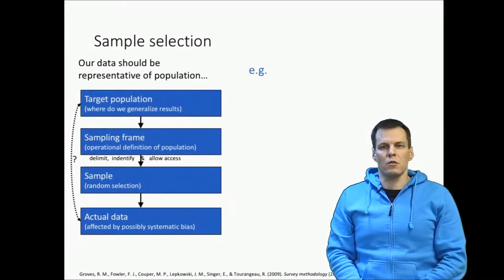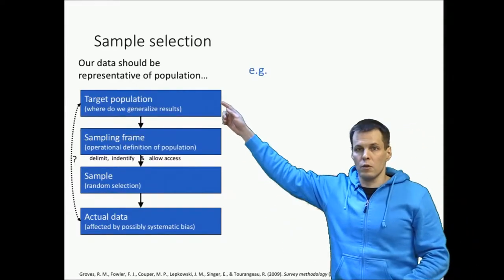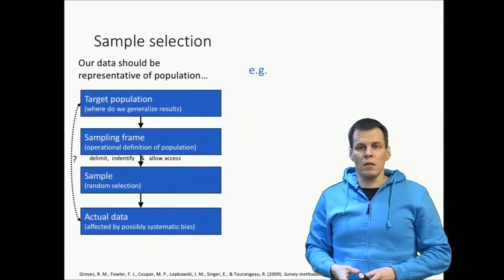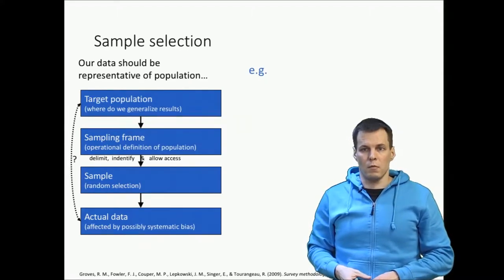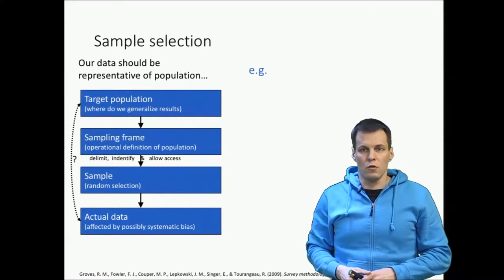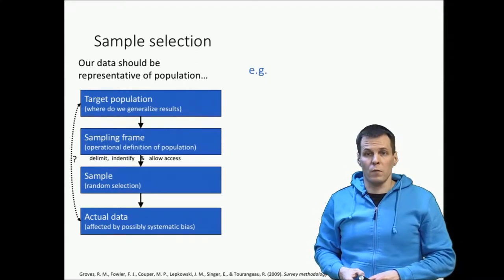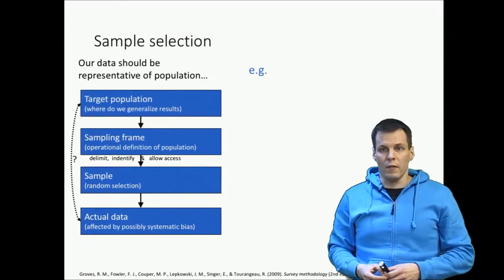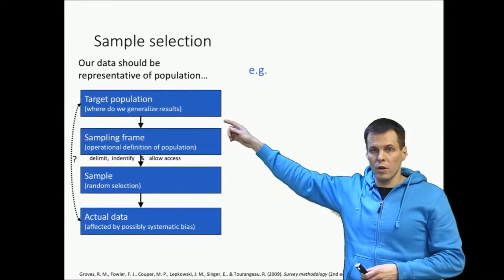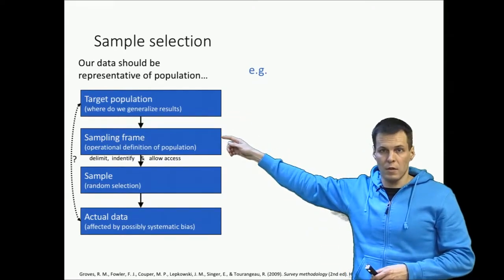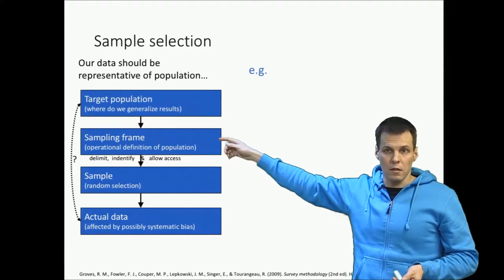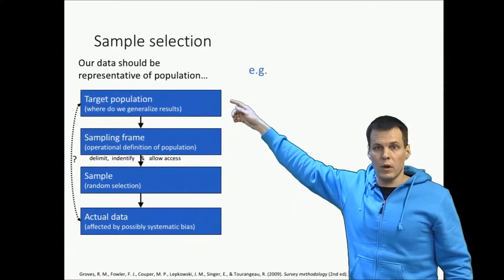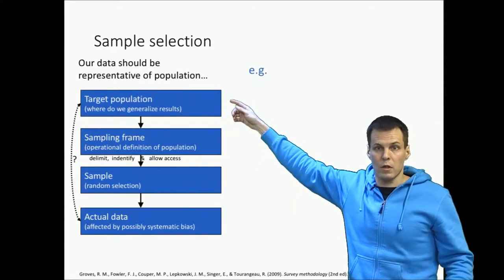First we have a population. That population is the thing that we want to study — we want to say something about it. Let's say we are studying that population using a survey that we mail to companies. To send out the invitations to participate we have to have an address to every company, so we have to have some kind of operational definition of our population. We call the operational population a sampling frame. The sampling frame is an actual list of companies or people or whatever things we're studying, and the population is the conceptual definition of the thing we're studying.